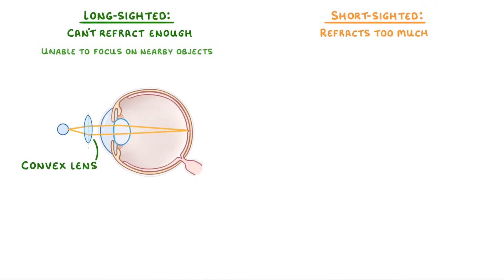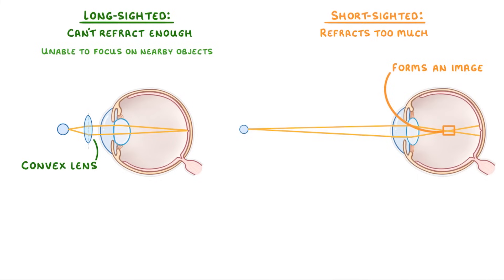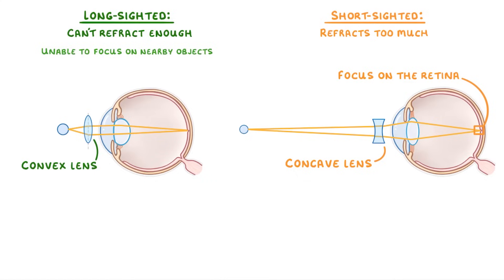In short-sighted people, the issue is that the lens refracts light too much. This means that light from distant objects, which doesn't normally need to be refracted very much, ends up being over-refracted, so that it focuses and forms an image before the retina, meaning the object appears blurry. To fix it, we need glasses that contain concave lenses, because they refract light outwards and so counteract the over-refraction of the lens, which allows the light to focus on the retina. The medical name for long-sightedness is hyperopia, and the medical name for short-sightedness is myopia.